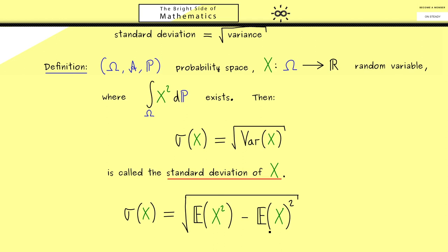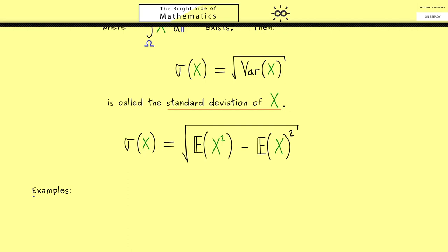Therefore, you should see the properties we prove for the variance also translate immediately for the standard deviation. This is good to know for all your calculations. However, before we talk about these properties, let's look at some examples.